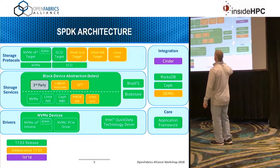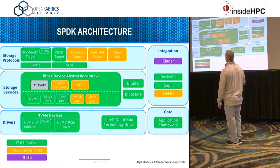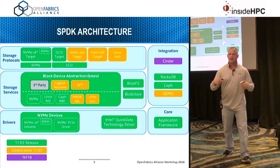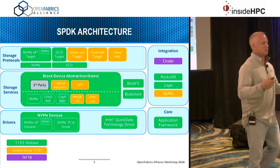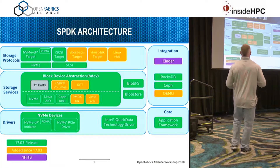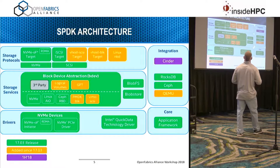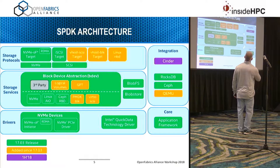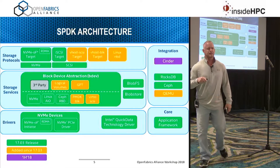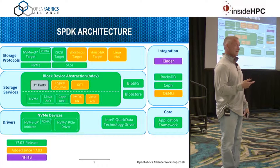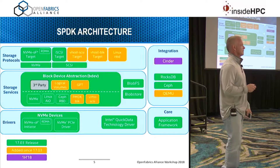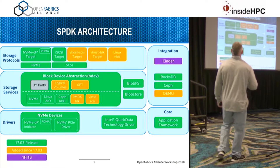Starting at the top, we've got our storage protocols layer. This is looking in from the application or looking in from the fabric, and this is where our applications are implemented. So this is where NVMe over Fabrics target is at. We've got an iSCSI target - that's pretty much the same thing as NVMe over Fabrics target but iSCSI for the protocol. And then you see a few vhost targets as well, a block target and a SCSI target. A lot of CSPs are using our vhost optimizations to get incredible VM densities, much more so than they could without user space SPDK help.